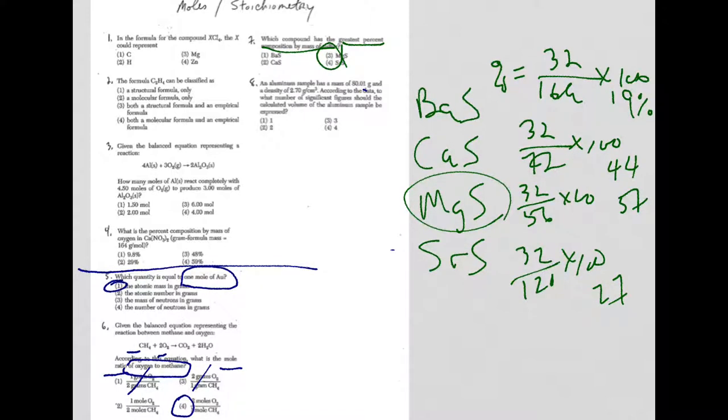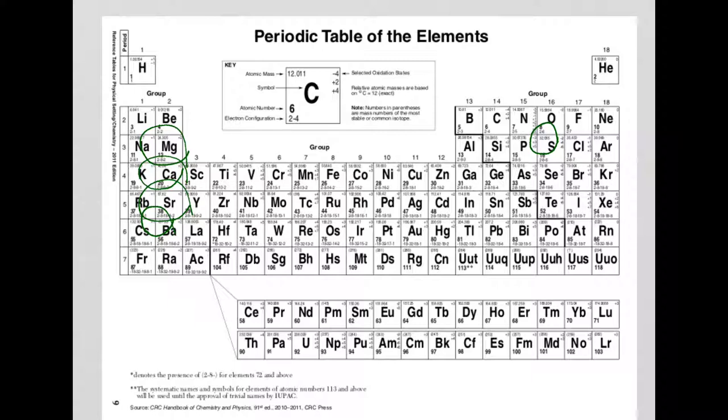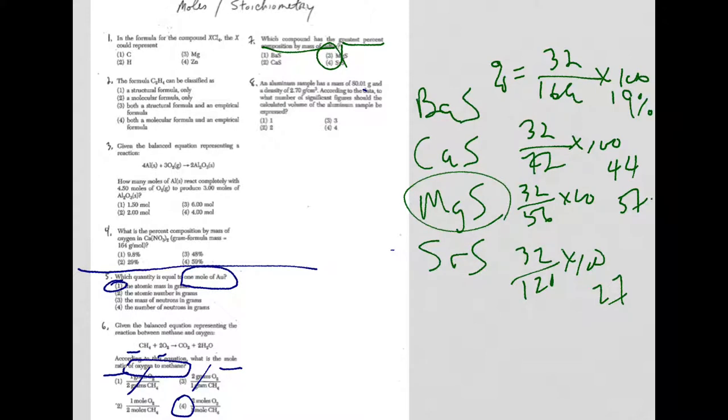So the greatest percent composition is going to be for the magnesium sulfide. Now, you could have just looked at the periodic table and saw magnesium was the highest on the periodic table, but also the lowest mass. And that would mean, because they're all with sulfur, that you would get the highest percentage with magnesium sulfide. It's up to you. You could reason it out, find it on the table, look at that trend, or do the math for each one to make absolutely sure.